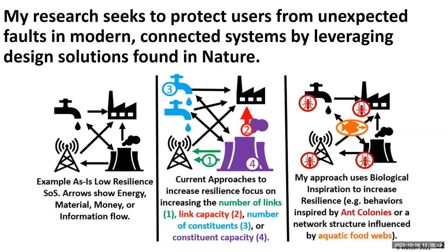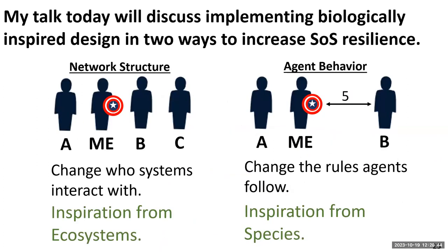Our approach says: rather than changing capacity or links, let's look at nature. Can we take behaviors inspired by ant colonies to increase resilience? If we're making a change to the network structure, can we use things inspired by food webs? Specifically, we'll change who the systems interact with by looking at ecosystems — how are they arranged and how can we mirror those arrangements? And we'll change the rules agents follow by looking at individual agents in nature and species-level behavior to see how they can impact resilience.